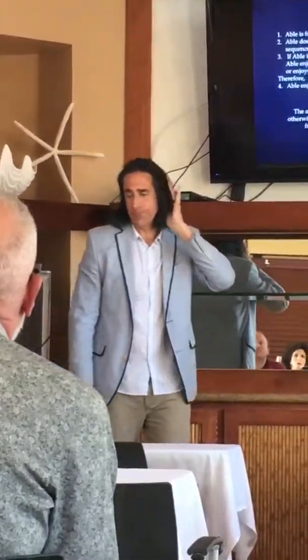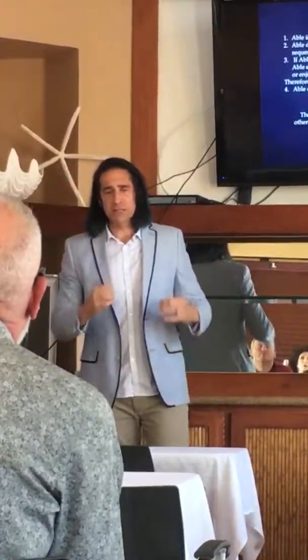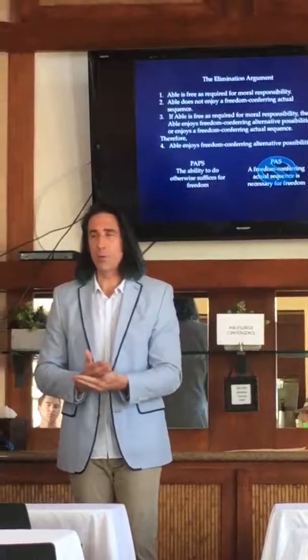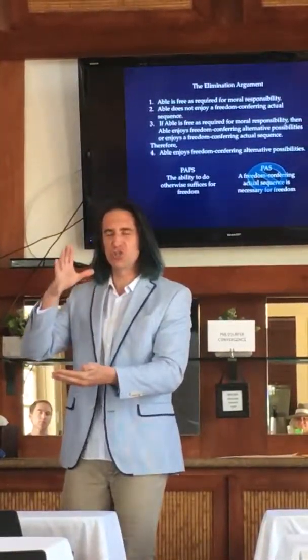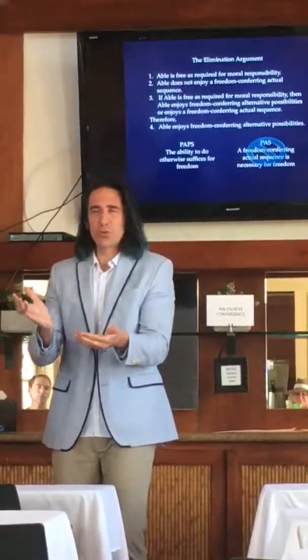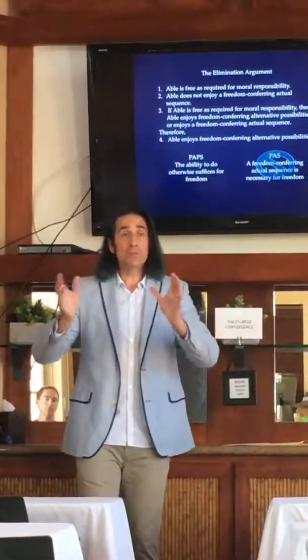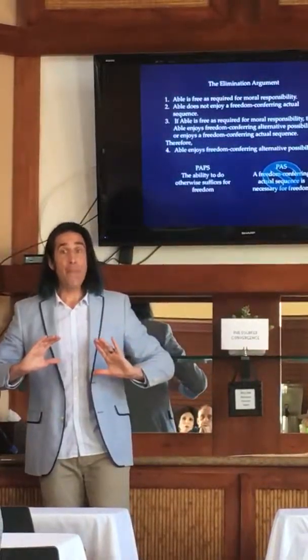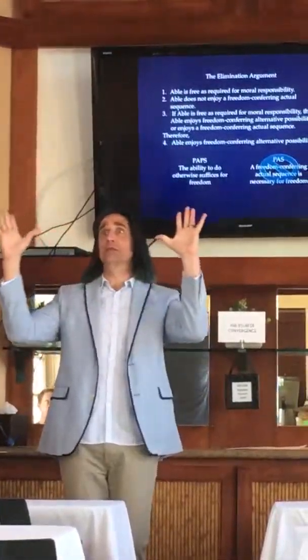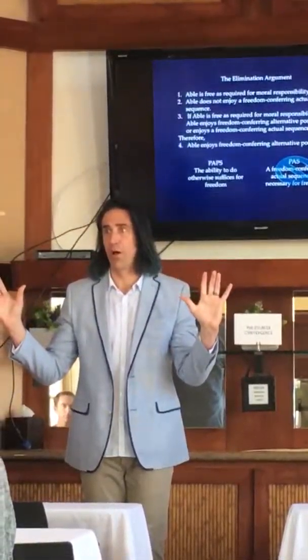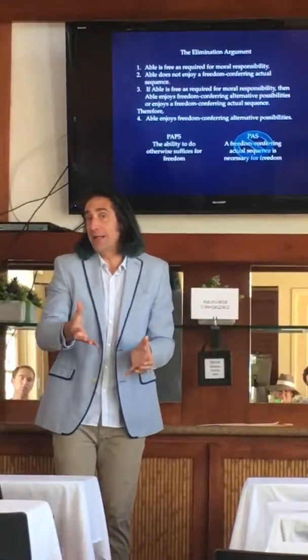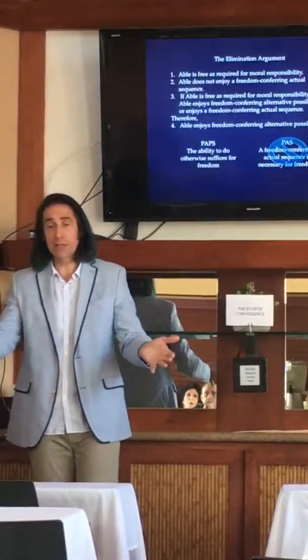Now, how do we answer some objections? Because the case hinges on the fact that there's a difference in freedom — Abel is uniquely free in this case, and Mabel is not free — whereas the difference-maker is the fact that Abel could have done otherwise. Objections take one of two sorts. Number one, the actual sequence folks defending PAPS can deny the attributions — in other words, deny premise one and say Abel is not free or morally responsible. Or they can deny the difference-maker by looking for flickers of actual sequence freedom, or essentially deny premise two, saying there are some subtle actual sequence differences that account for the difference in freedom.